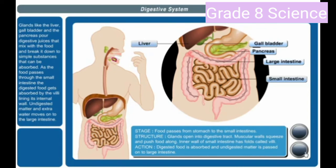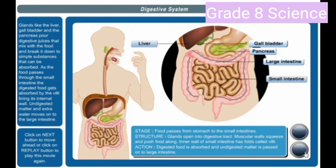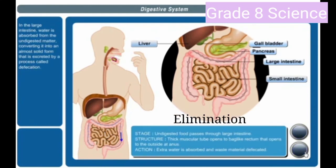As the food passes through the small intestine, the digested food gets absorbed by the villi lining its internal wall. Undigested matter and extra water moves on to the large intestine. In the large intestine, water is absorbed from the undigested matter, converting it into an almost solid form that is excreted by a process called defecation.